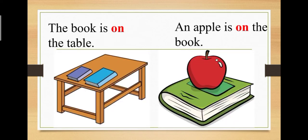So, let's see few examples. The book is on the table. In picture one, you can see the book is on the table. In the second picture, where is an apple? Yes, an apple is on the book.